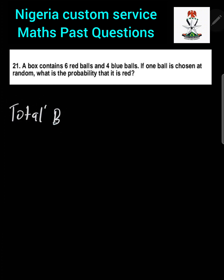Question 21: A box contains six red balls and four blue balls. If one is chosen at random, what is the probability that it is red? To solve this, the first thing we need to do is get the total number of balls, which is six red balls plus four blue balls, giving us a total of 10 balls.